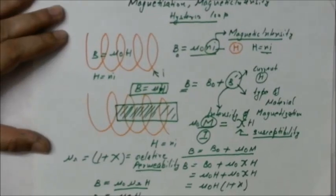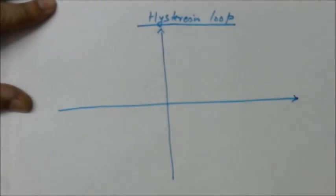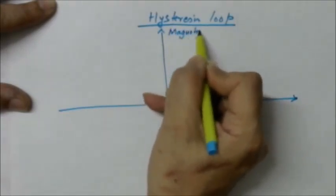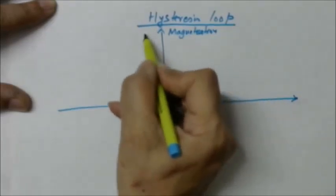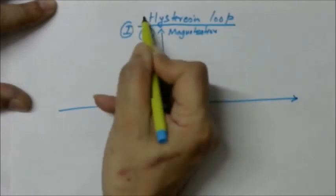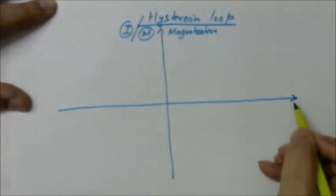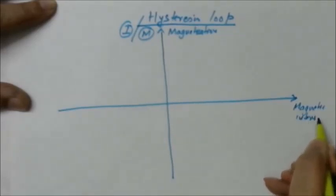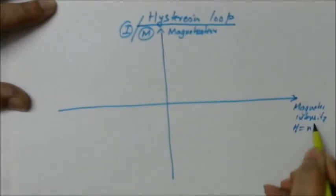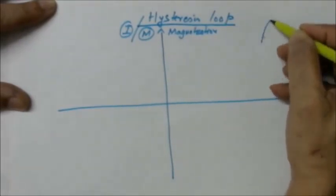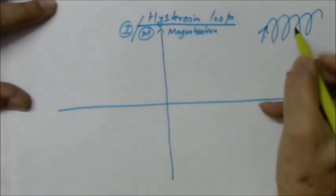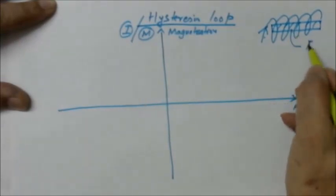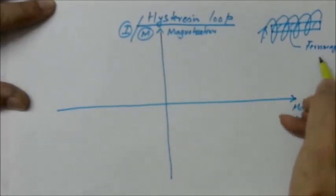Now we will cover the hysteresis loop. In this, we plot magnetization M on the y-axis and magnetic intensity H on the x-axis. H is equal to nI. Suppose we take a coil, pass current, and there is a ferromagnetic material inside the solenoid.